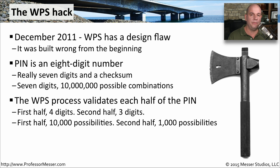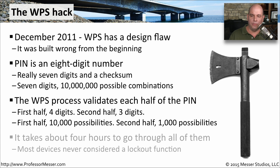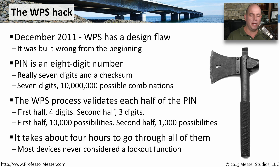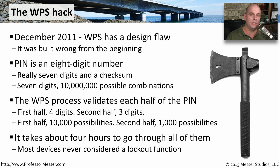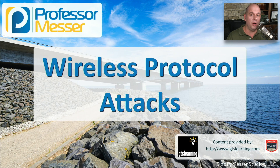The access point examined the first four digits and the second half — three digits plus a checksum — independently. The first half had only 10,000 possibilities and the second only 1,000, meaning you only needed to try about 11,000 combinations in total. On a relatively conservative brute force attempt, you could cycle through every possible iteration in about four hours. These devices generally had no lockout function, so they couldn't detect the brute force attempt. As long as you had access to the device for four hours, access to the network was guaranteed — which is why WPS today is either disabled or unavailable on all access points.